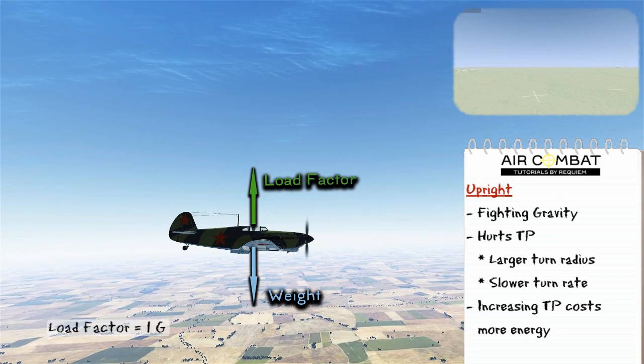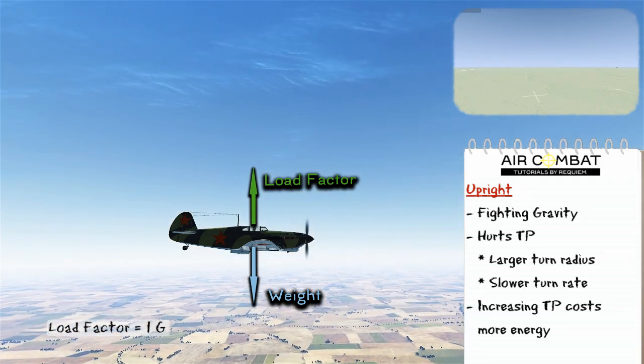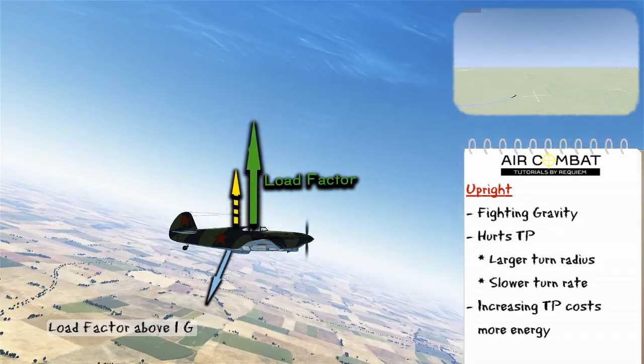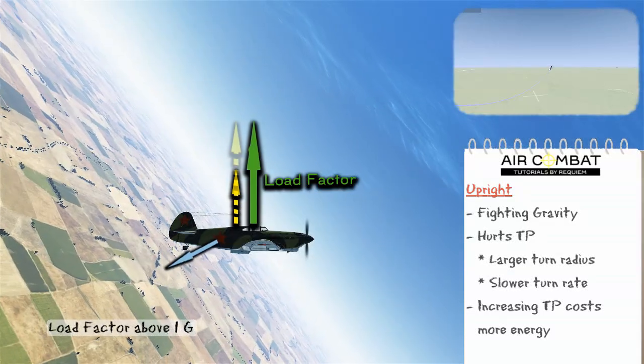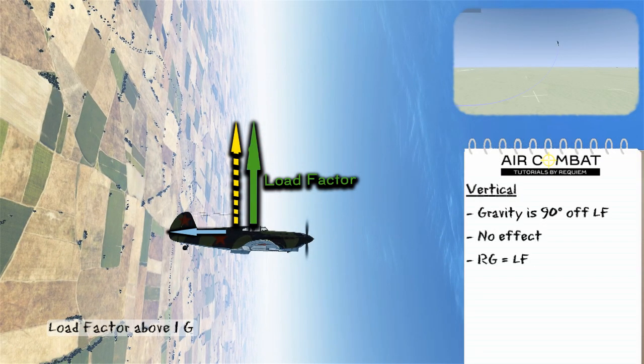So here we are again in Australian level flight. We're going to initiate a loop, and we'll look at things in the vertical plane. Note that as we begin the loop, radial G is small. This is because we're fighting against gravity, and this hurts our turn performance. Then once we reach our perfectly vertical point here, gravity has no effect on radial G, so load factor is in fact equal to radial G at this point.